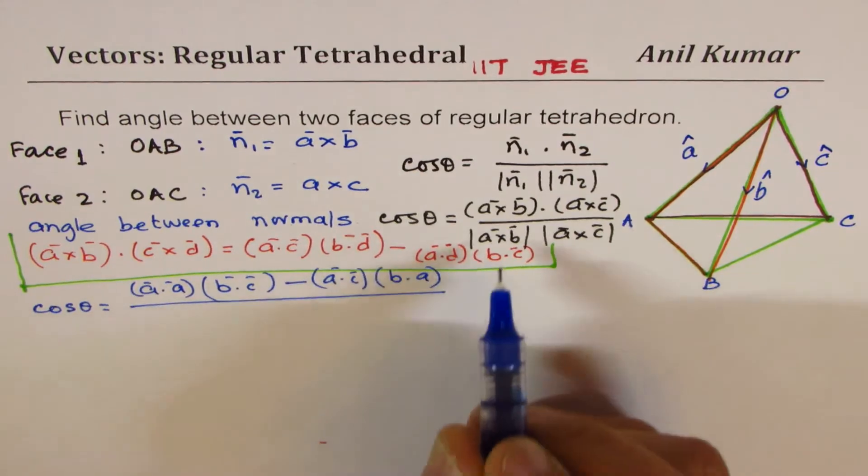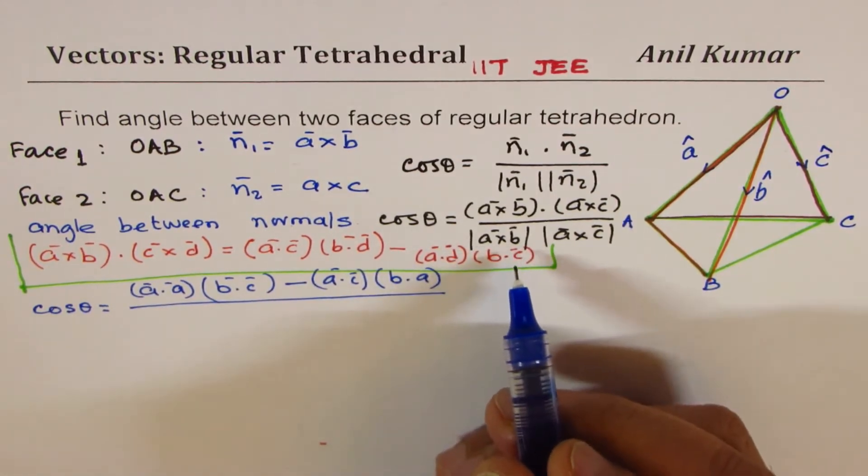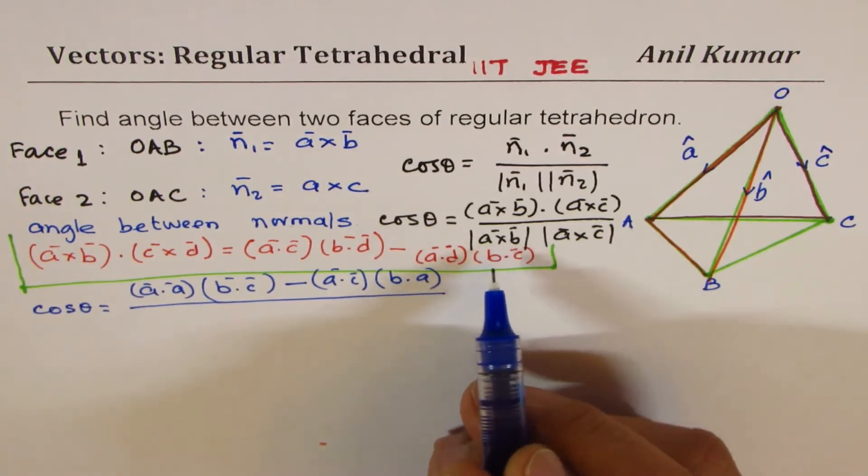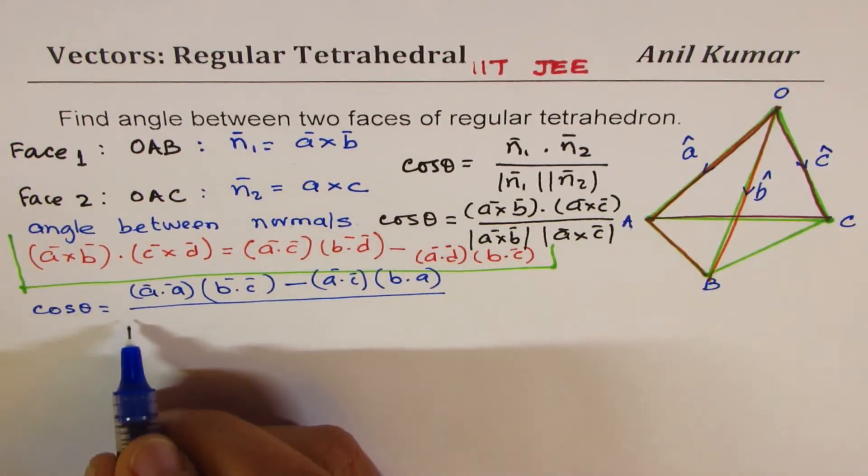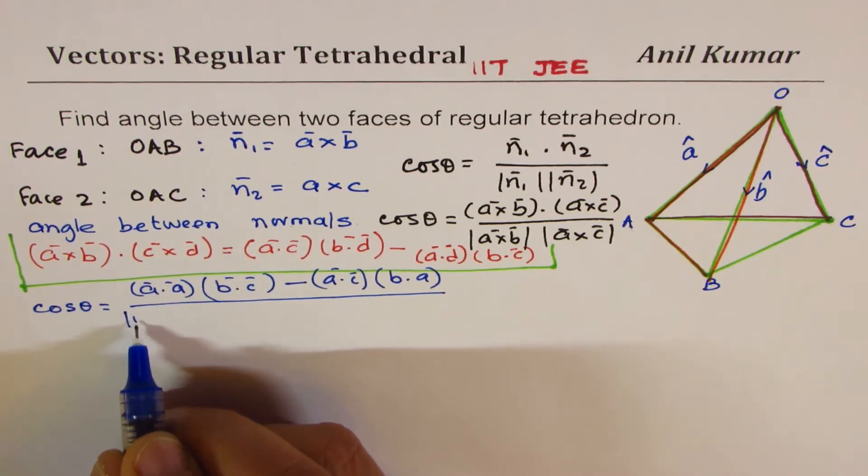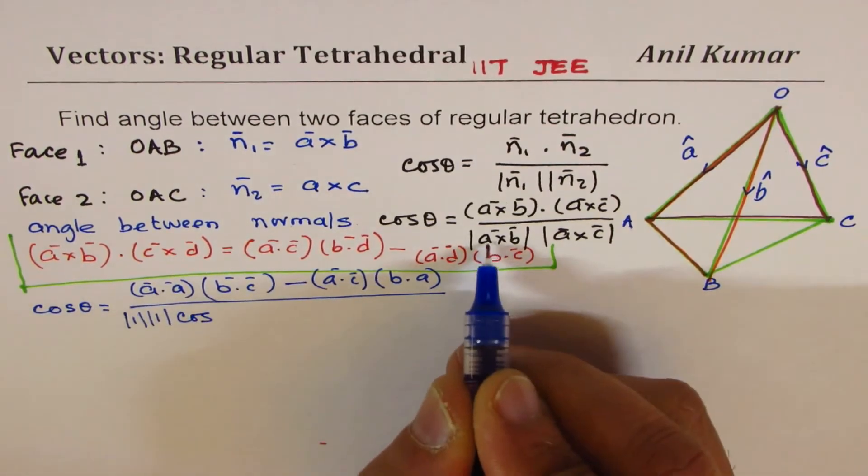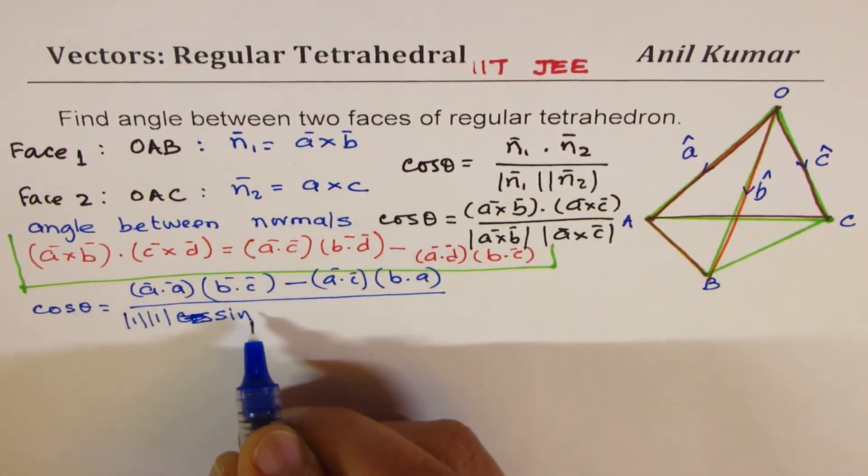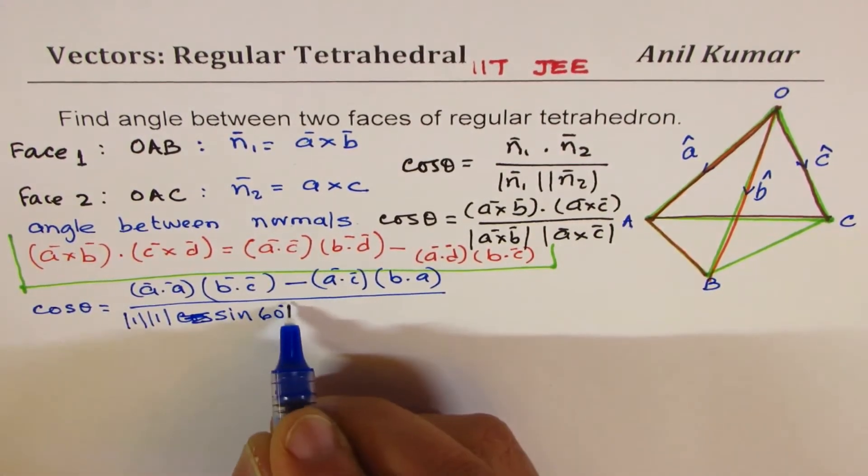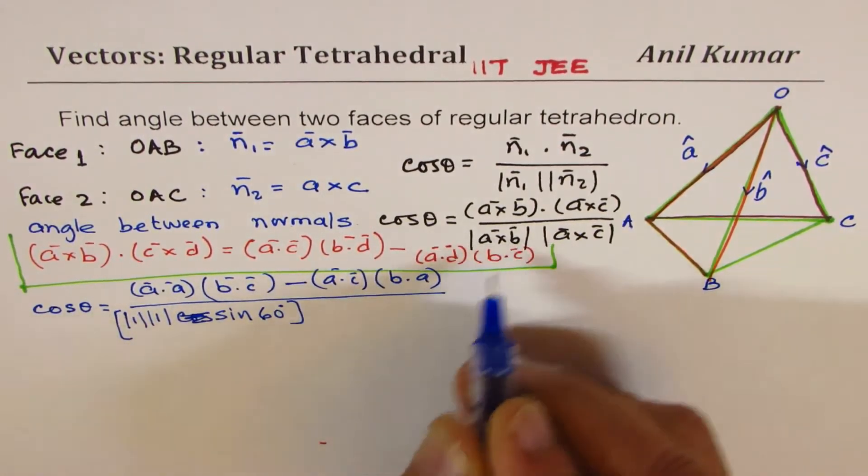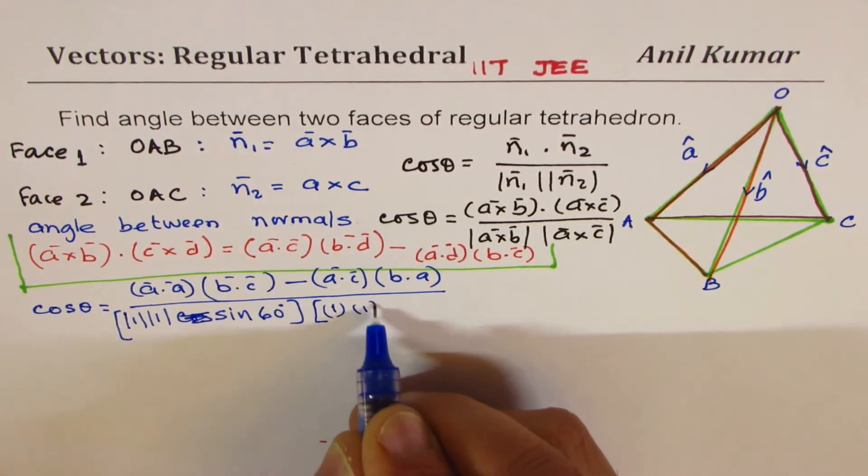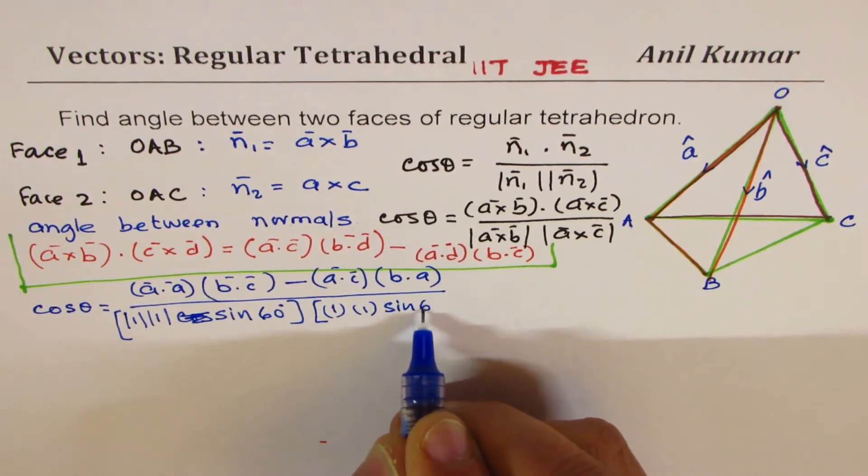The denominator will be, when you're saying cross product, it is magnitudes times sine of angle between them. So this particular magnitude is |A| times |B| times sine of angle between them, which is 60 degrees. Same for the next one: |A| times |C| times sine of 60 degrees.